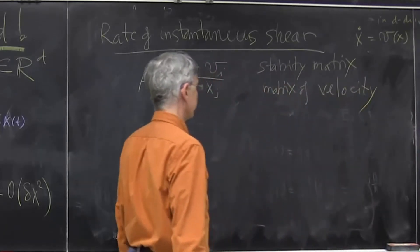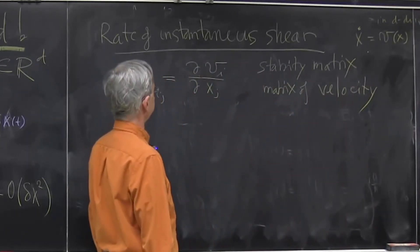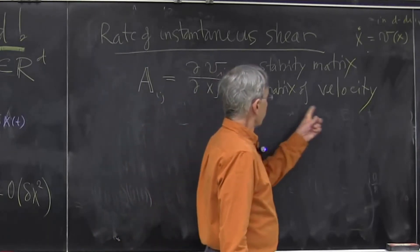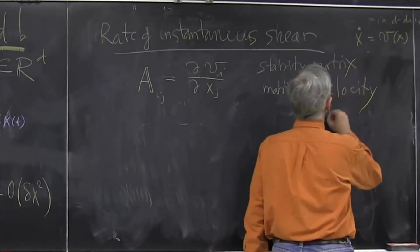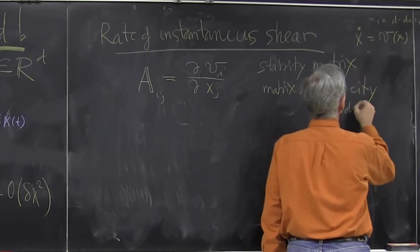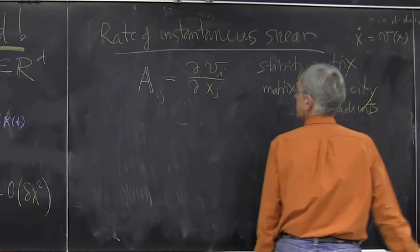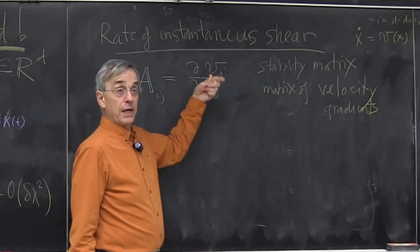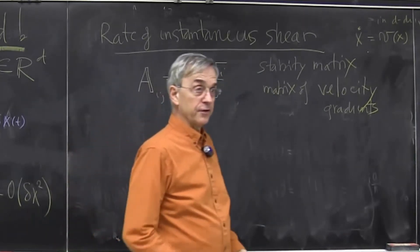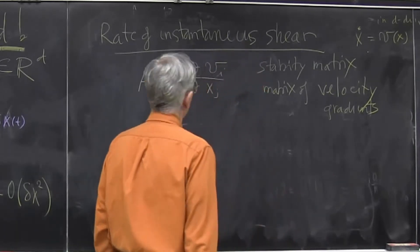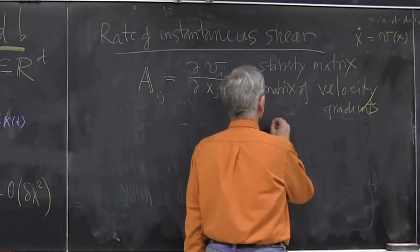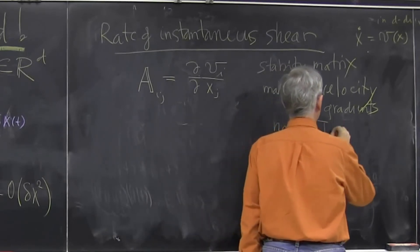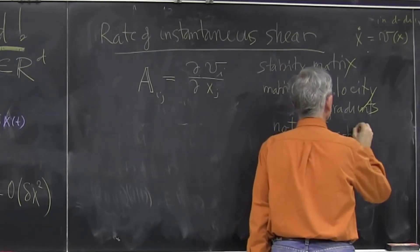So it's not your bicycle's velocity. And it's definitely not a speed which is magnitude of velocity. So matrix of velocity gradients. Now when you look at this object, its dimension is one over time. So it's some kind of rate. So it's a rate of shear. And one thing that it's not, it's not a Jacobian, which I'll define in a second.